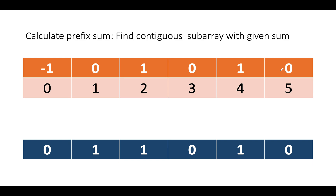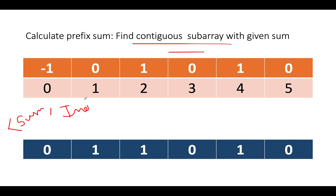Now the problem reduces to finding a contiguous subarray with a given sum — a problem we've already solved using maps. We create a map where the key is the prefix sum value and the value is the index at which this sum first occurs. As a default case, we put sum 0 at index -1 into the map.